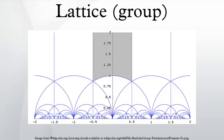A lattice in the sense of a three-dimensional array of regularly spaced points coinciding with, for example, the atom or molecule positions in a crystal — or more generally, the orbit of a group action under translational symmetry — is a translate of the translation lattice, which need not contain the origin, and therefore need not be a lattice in the previous sense. A simple example of a lattice in ℝⁿ is the subgroup ℤⁿ.